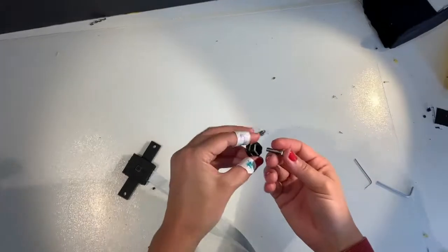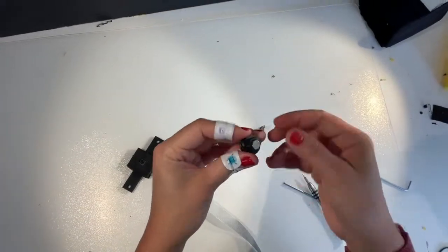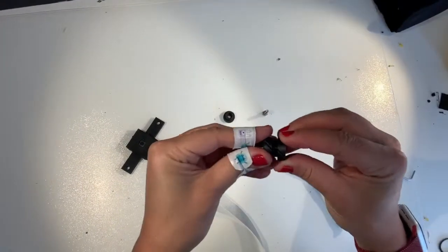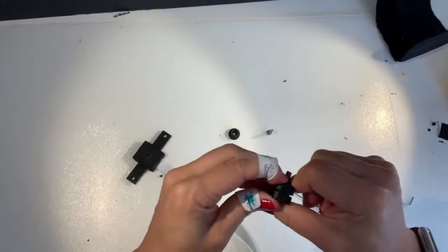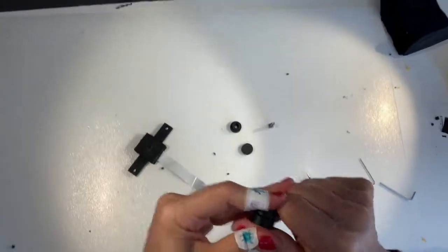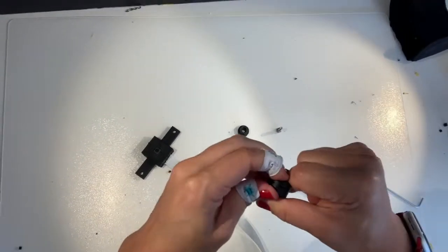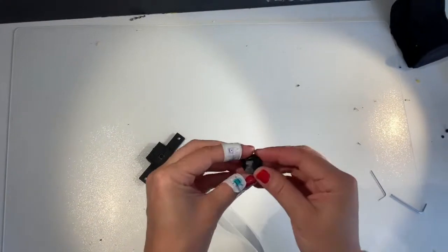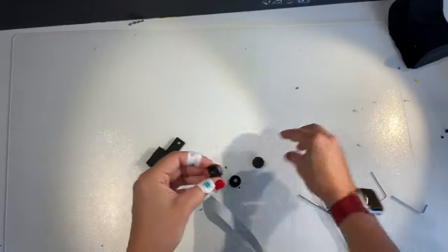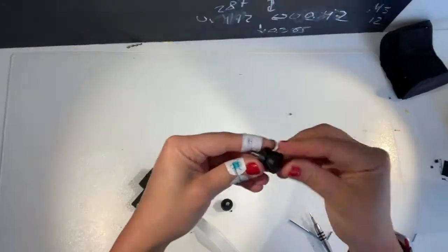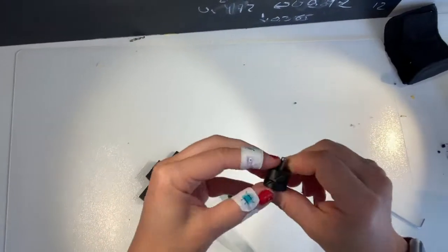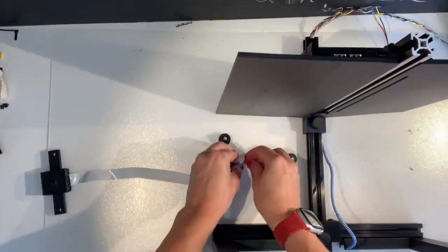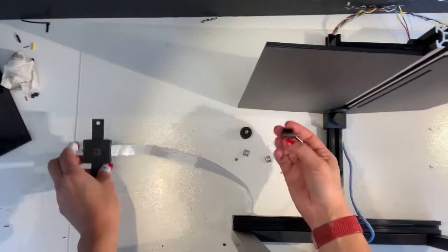The thumb screws are used to hold the camera house on the vertical rail, and they're designed for a user-friendly adjustment of the height for the camera. You are going to need two T-nuts and two thumb screws.